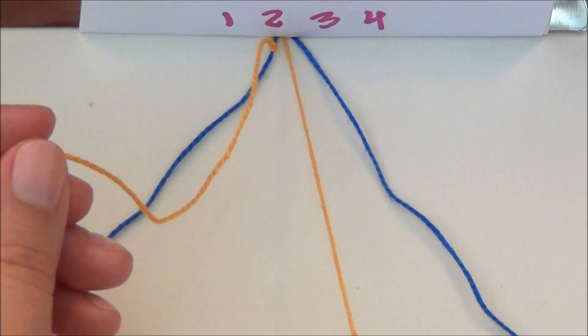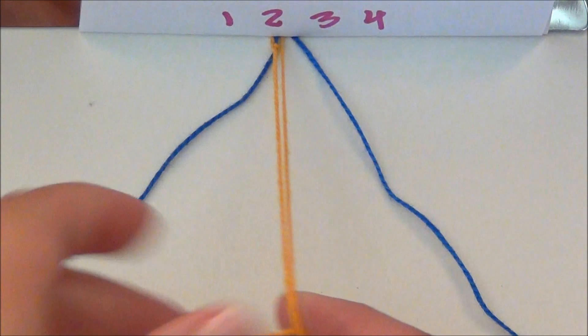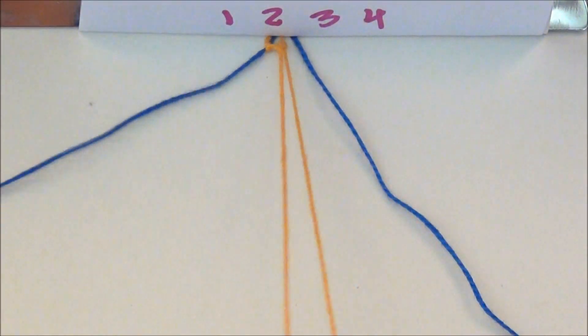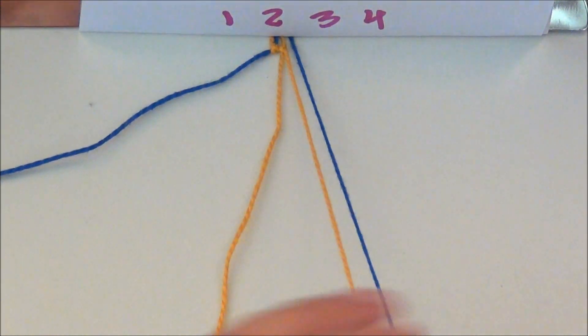Now number two is going to tie onto number three. We're just doing regular forward knots for this candy stripe. Now onto number four.